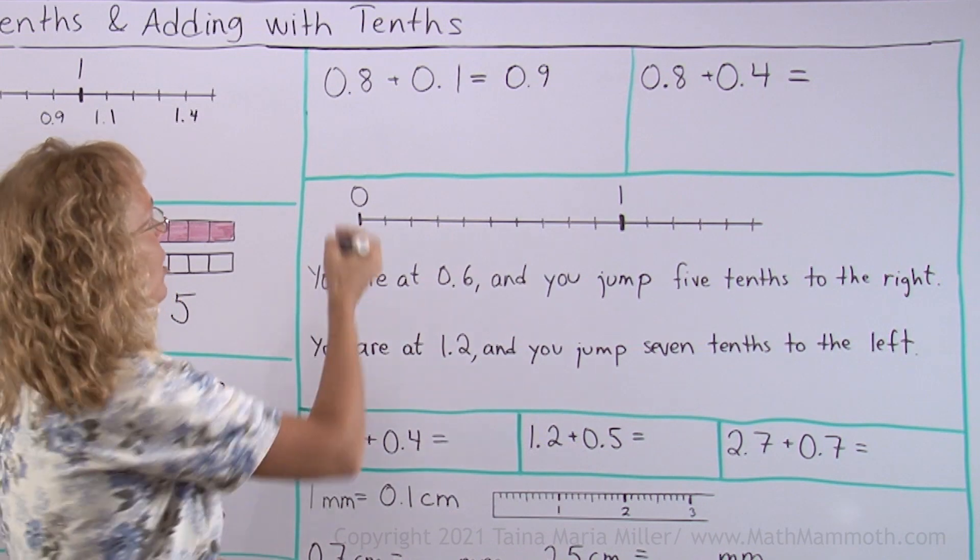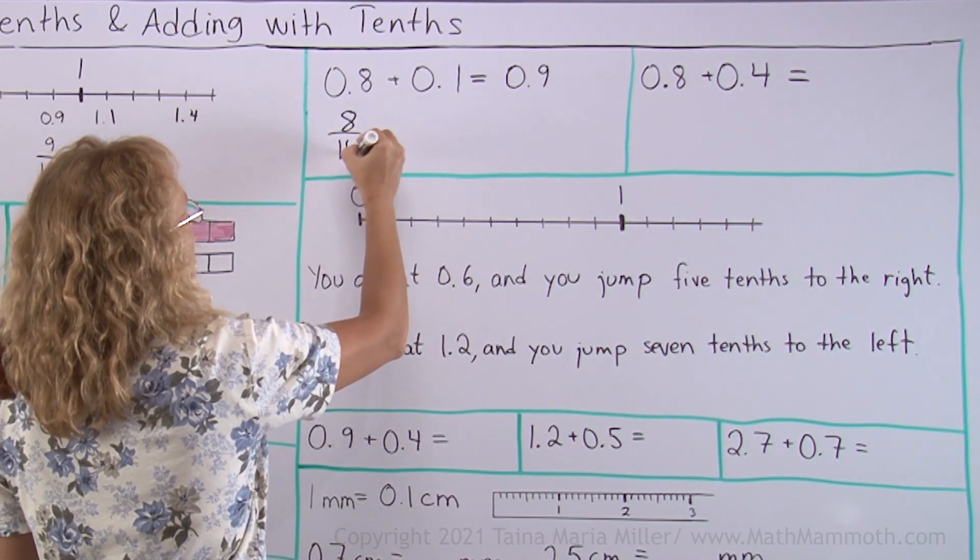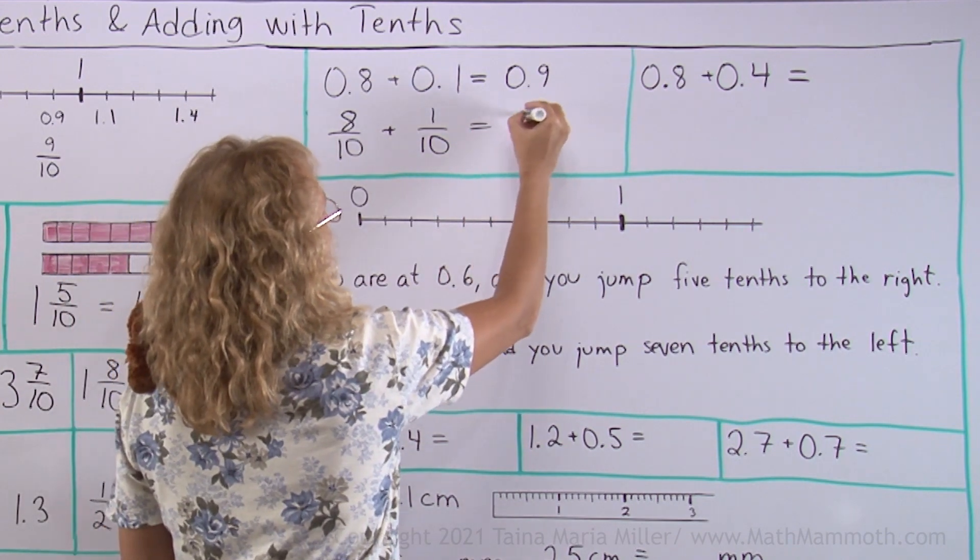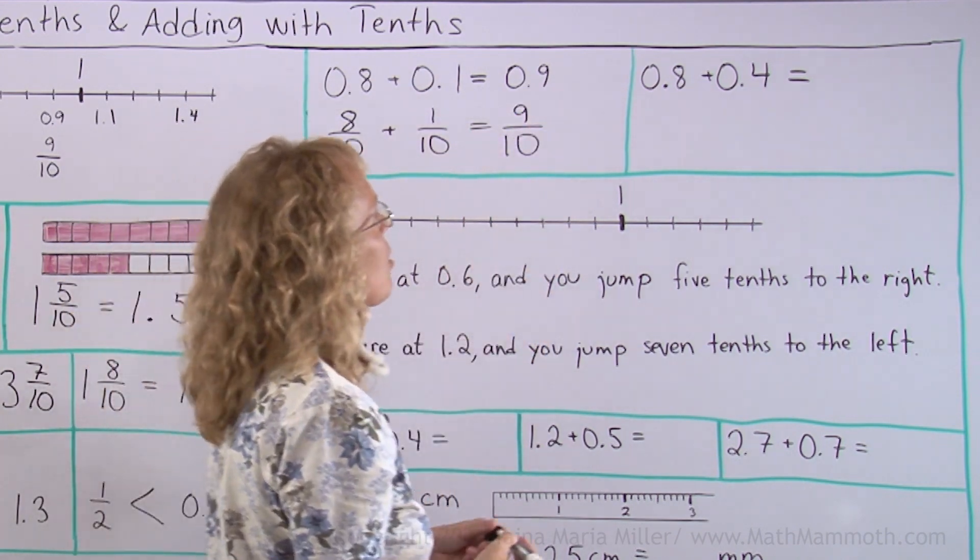I will also write it using fractions, 8 tenths plus 1 tenth equals 9 tenths. Now here though,